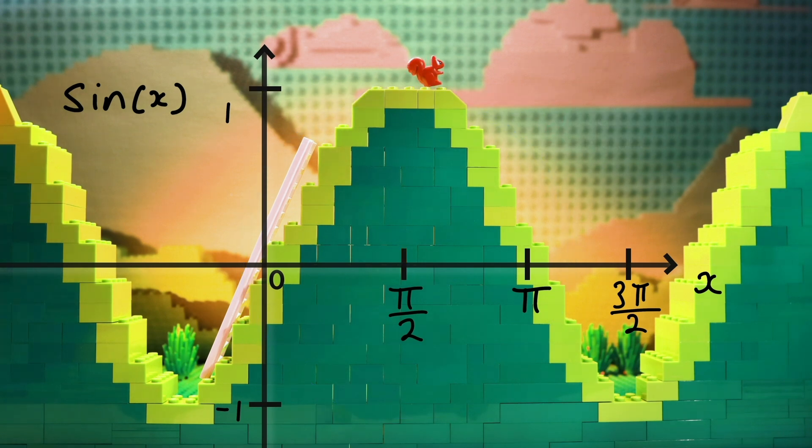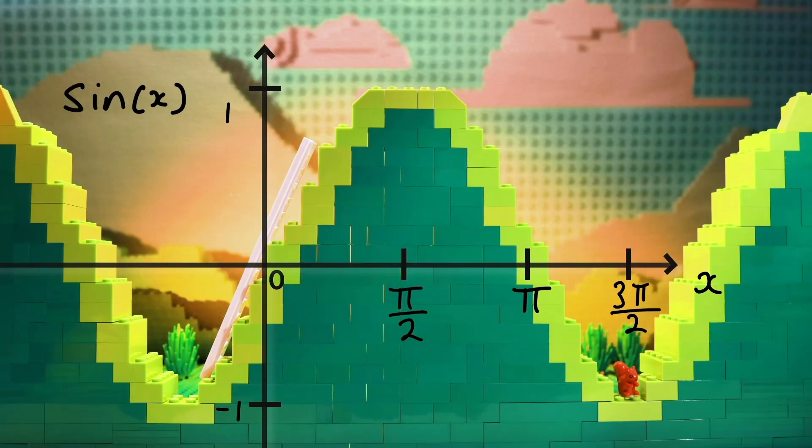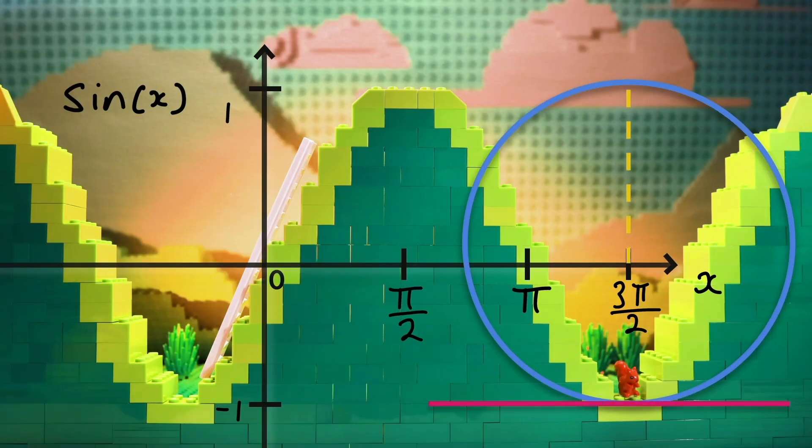And finally, if we work out the curvature at 3 pi over 2, we get kappa equals 1. So the radius of curvature is also 1, and the positive sign of kappa indicates our curve at this point is concave up, bending upwards from the tangent.